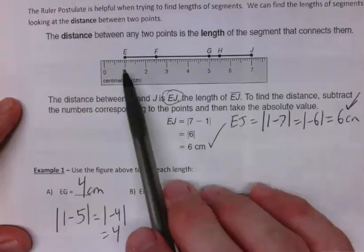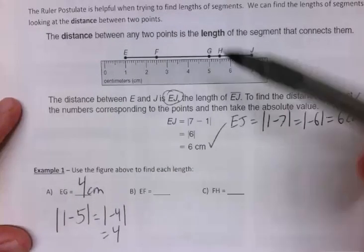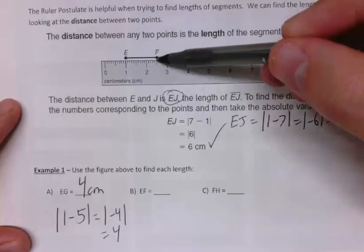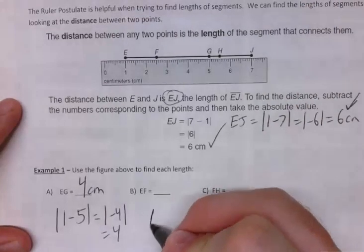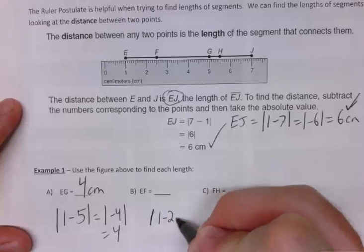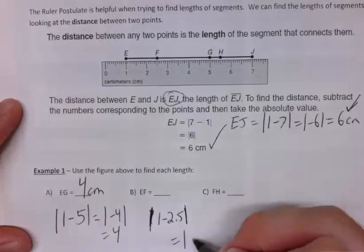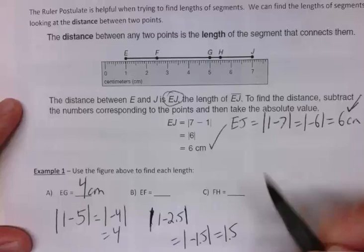How about EF? E starts at 1. F looks like, you've got to approximate here a little bit, looks like about 2.5 I'm going to go with. So EF equals the absolute value of 1 minus 2.5, which is the absolute value of negative 1.5, which is just 1.5.